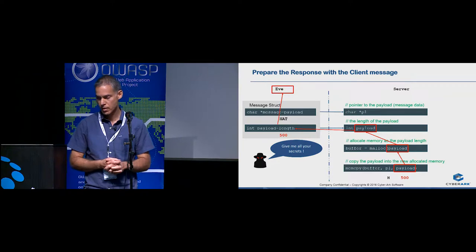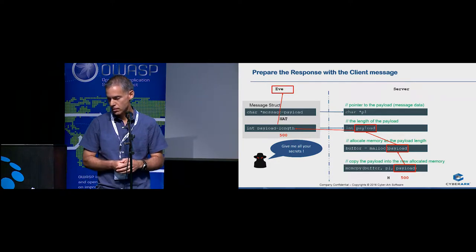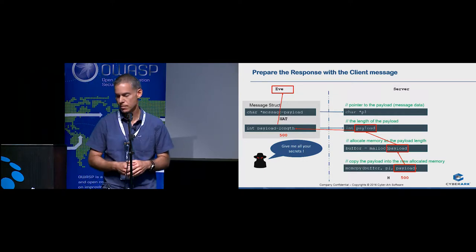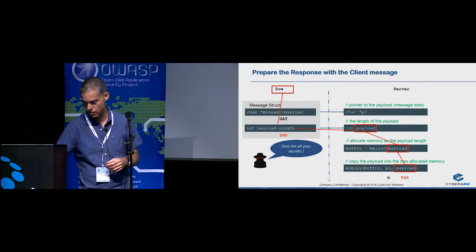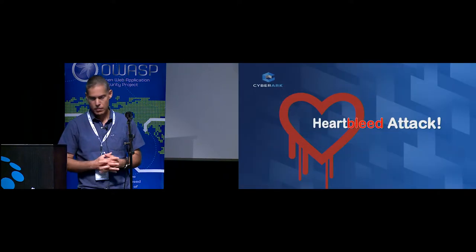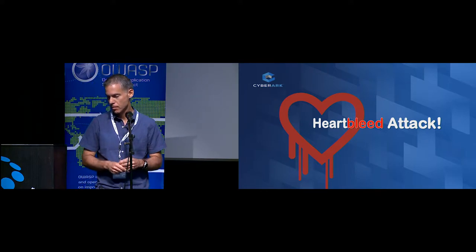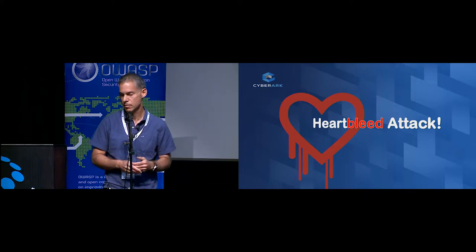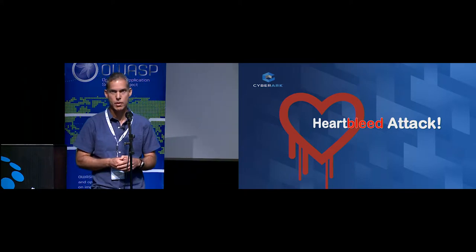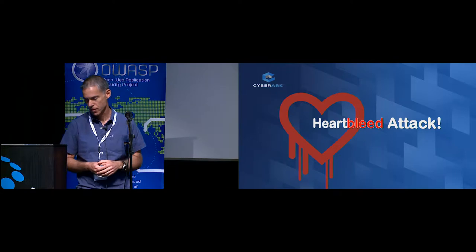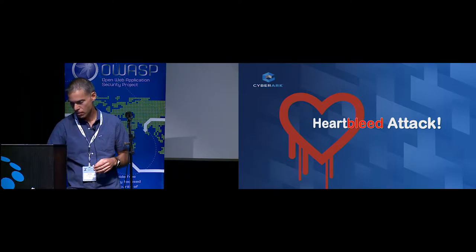What you can see here is that the payload length is completely controlled by the client. The server doesn't check anything — there's no sanity check on this parameter, on the payload length. So if we replace the client with Eve the evil, who tells the server the payload length is 500 for the word 'hat', this is what the server accepts and sends back — all 500 characters from its memory. The reality was that the maximum block of memory the server could send, because of how the heartbeat feature works, is 64 kilobytes. That's a lot.